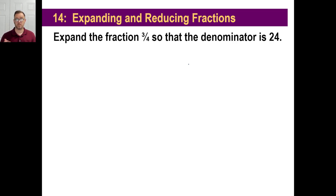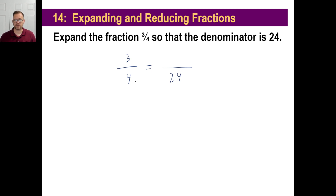You'll see things like this: expand the fraction three-fourths so the denominator is 24. You look at this and expand it so the denominator is 24. What did you have to do to four to make it 24? You multiplied by six. So you do exactly the same thing to the numerator — it's like cutting every single piece of pizza into six pieces. You could eat 18 out of 24, which is the same thing as three out of four.